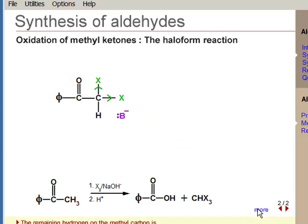The final methyl hydrogen is even more acidic, now that there are two halogens and the carbonyl group all withdrawing electron density. Clearly, the reaction proceeds as before, so that complete halogenation of the methyl group occurs.